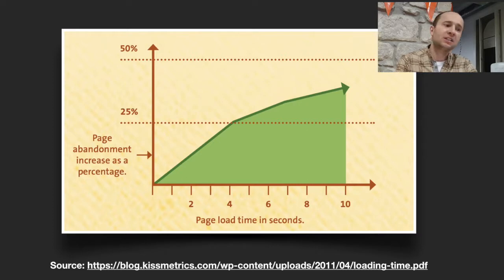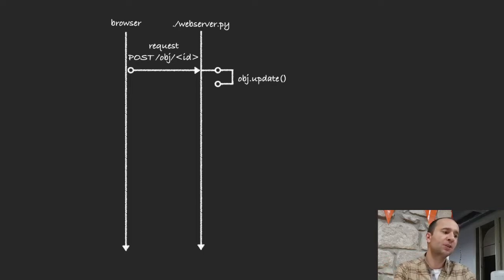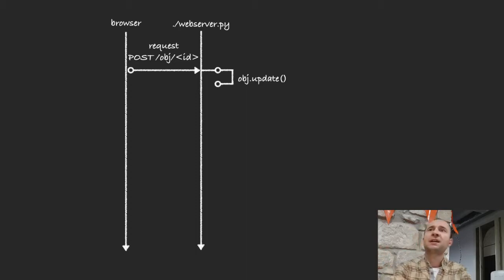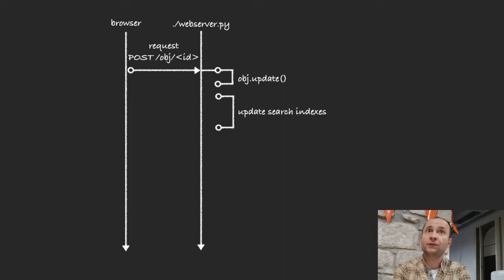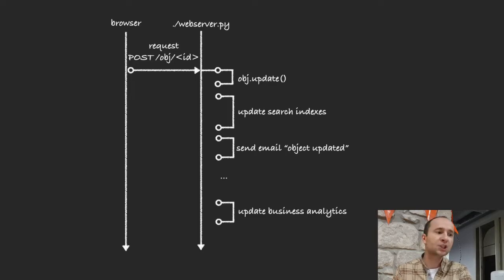So it's very important to keep page load as low as possible. Unfortunately it's not that easy, and nowadays web applications do a lot of stuff. As a very simple example, a web request that tries to update an object isn't just updating a record in a database. You have to do a lot of auxiliary stuff — update search indexes for full-text search, send an email in some cases, update business analytics, and so on. Everything contributes to the page load time.